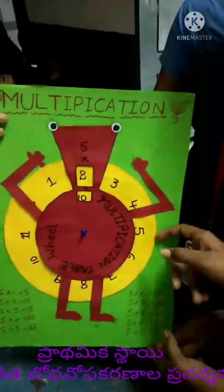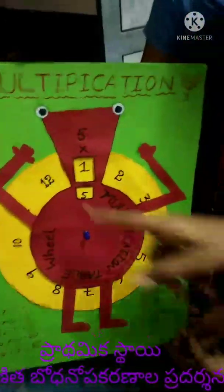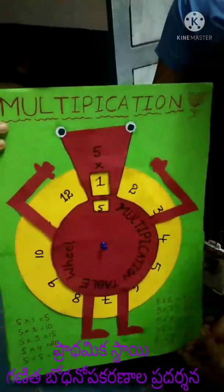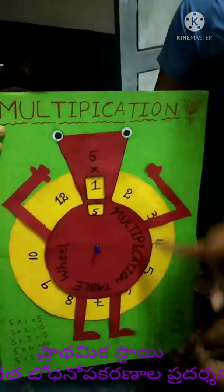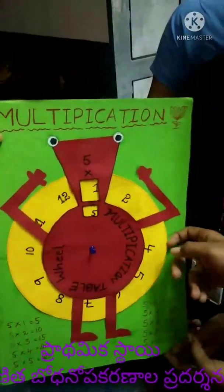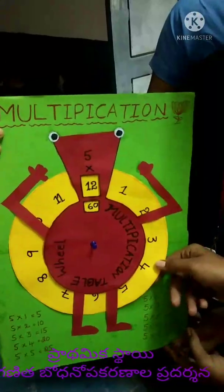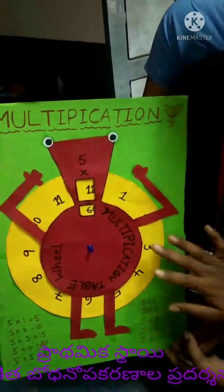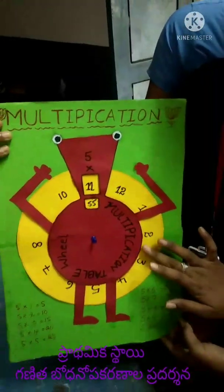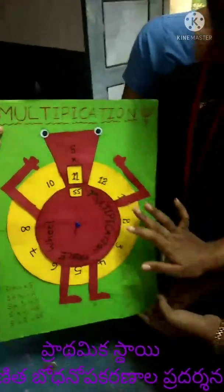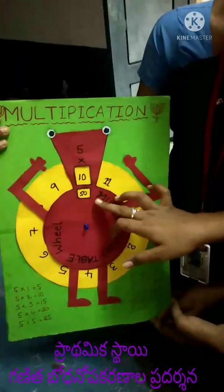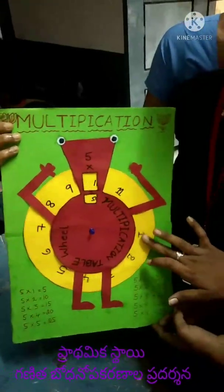Now we are using 4th class. I am presenting the TLM, and there were a number of tables and multiplications. So we have 55 people, and then we have 55, and we can answer them.